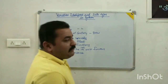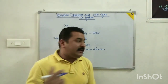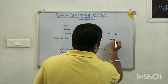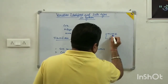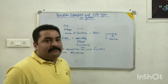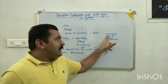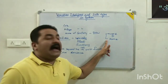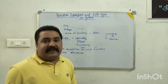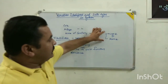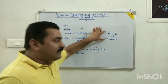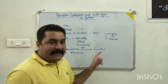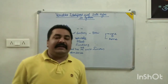Rule number two: Python is a case-sensitive language. Case sensitive means that if we write a variable 'name' with a small letter and another variable 'Name' with a capital letter, both of these are different variables in Python. There is a difference between a lowercase and an uppercase variable name.